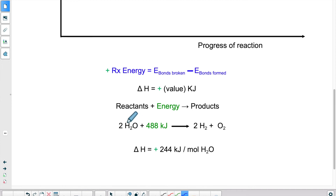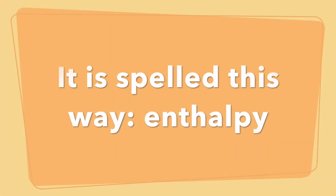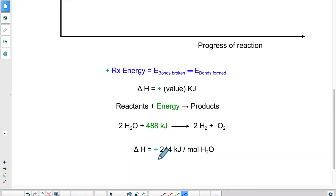Here is an example: this represents the electrolysis of water. We use electricity — a source of energy — to break down the molecules of water in order to form hydrogen and oxygen gas. If we don't want to express this energy within the reaction, we can express it as delta H, also called enthalpy, with a positive value. In this case, because we're breaking down water, we express it per mole of H2O. For every mole of water broken down, one mole of water requires 244 kilojoules of energy.